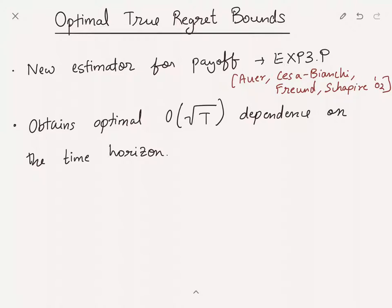This lecture is supported in part by NSF award CCF 1749864. The new idea here is to replace the estimator with a new estimator, that's it. Rest all remains the same. It's the same EXP3 algorithm. Instead of using IPS estimates, we'll use a slightly different estimate and the remaining procedure remains the same. This algorithm is called EXP3.P, from the same paper due to Auer et al. Doing this modification suffices to get the optimal order of square root t dependence on the time horizon.